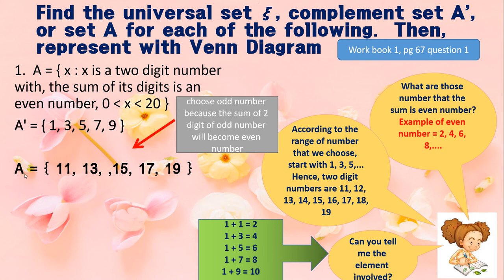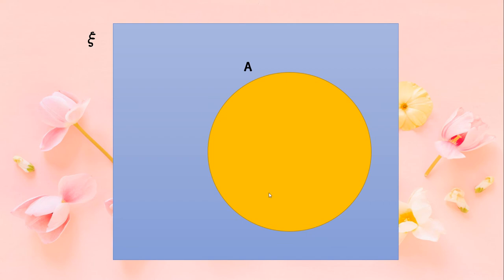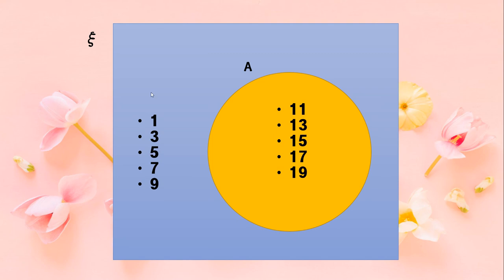Set A has elements {11, 13, 15, 17, 19}. My universal set is: x is an odd number where 1 ≤ x ≤ 19. I choose odd numbers because the digit sum of these two-digit odd numbers gives an even number. For the Venn diagram: draw a rectangle for the universal set, then a circle for set A containing the two-digit numbers with even digit sums. The complement of A contains numbers that are not two-digit or not producing an even digit sum.